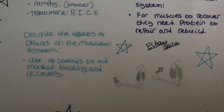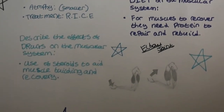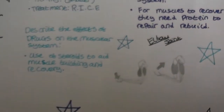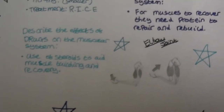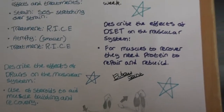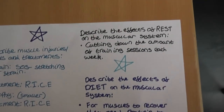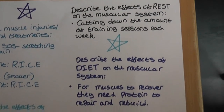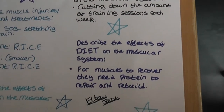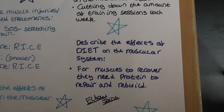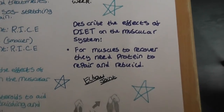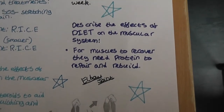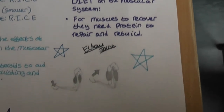Effects of drugs on the muscular system: use of steroids to aid muscle building and recovery. Effects of rest on the muscular system: cutting down the amount of training sessions each week. Effects of diet on the muscular system: for muscles to recover, they need protein to rebuild. Here is a diagram of an elbow joint.